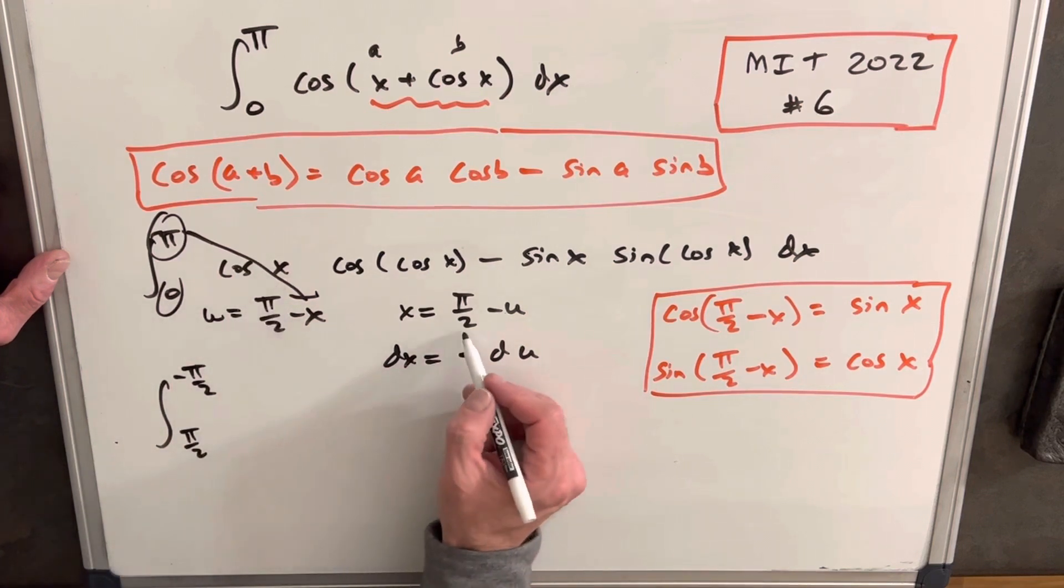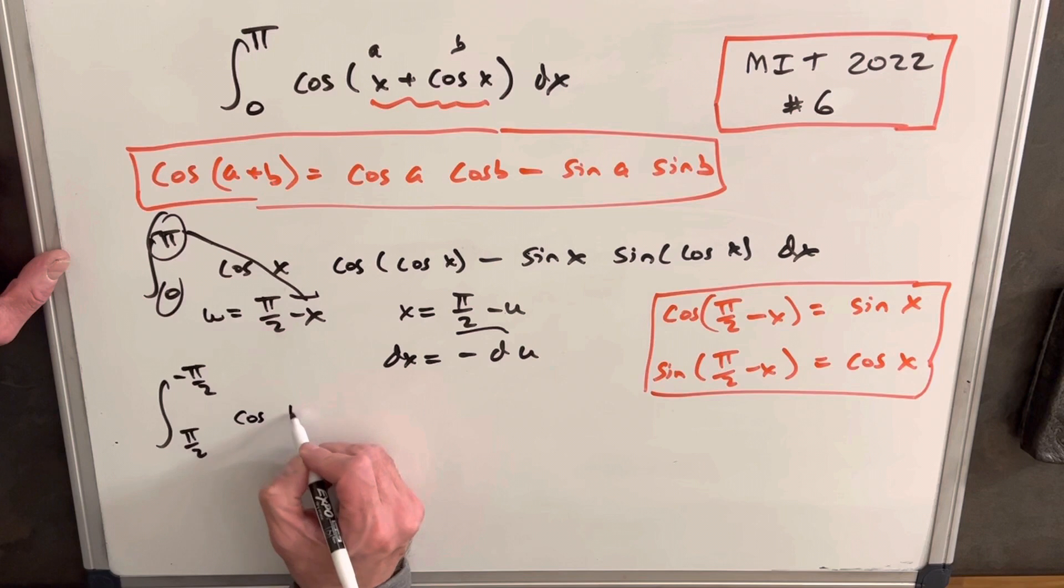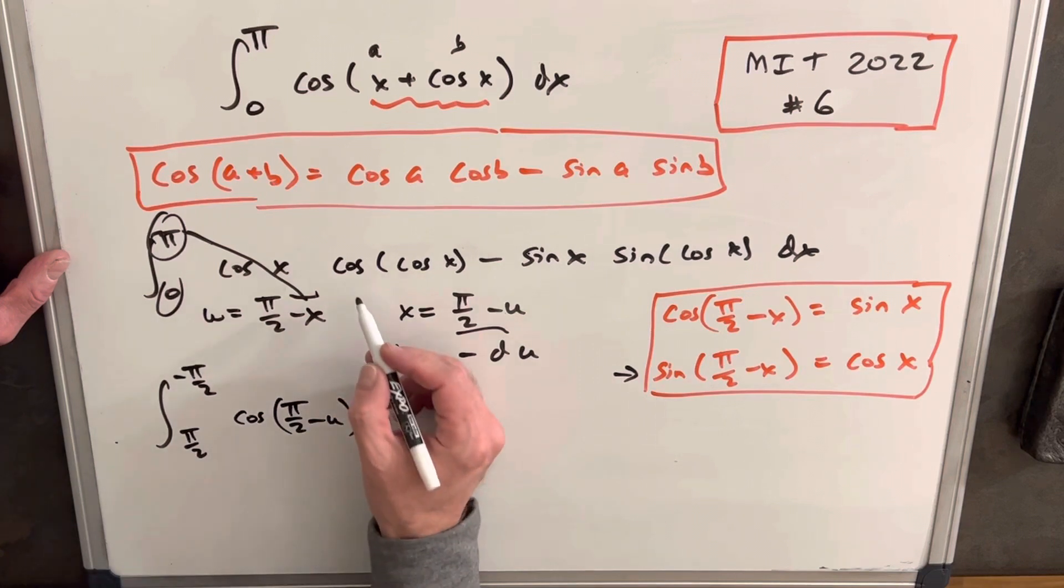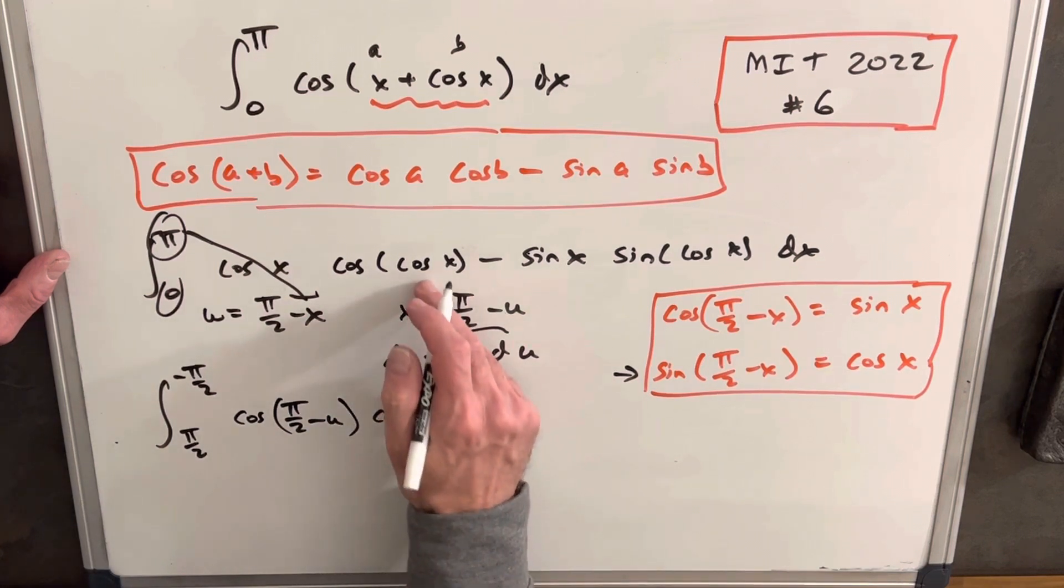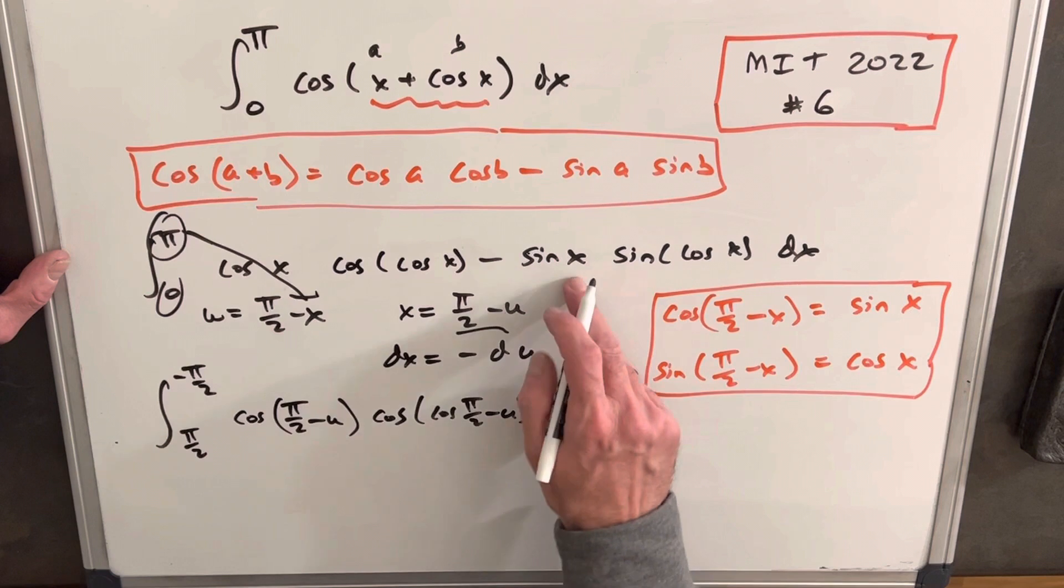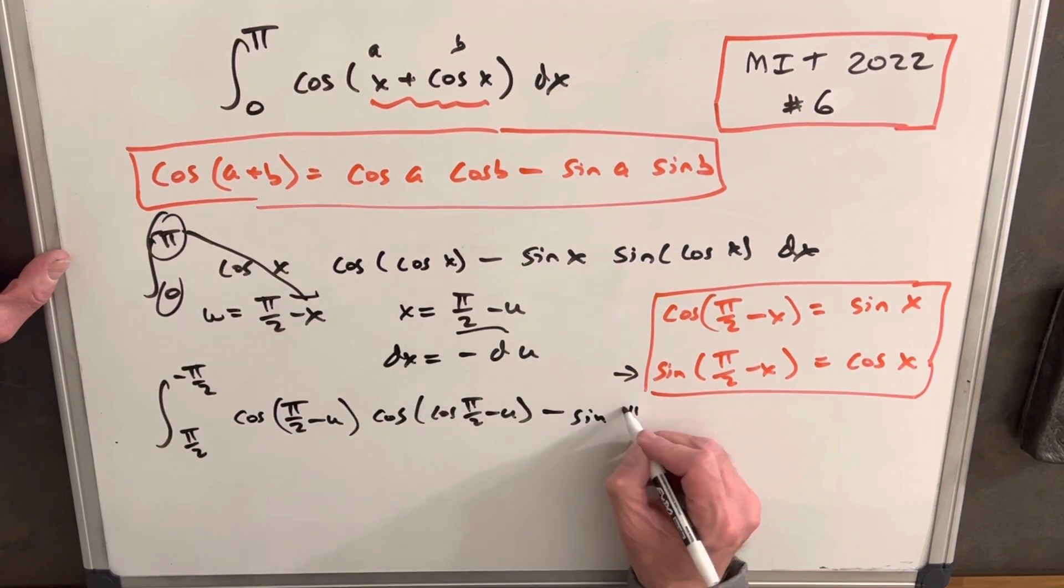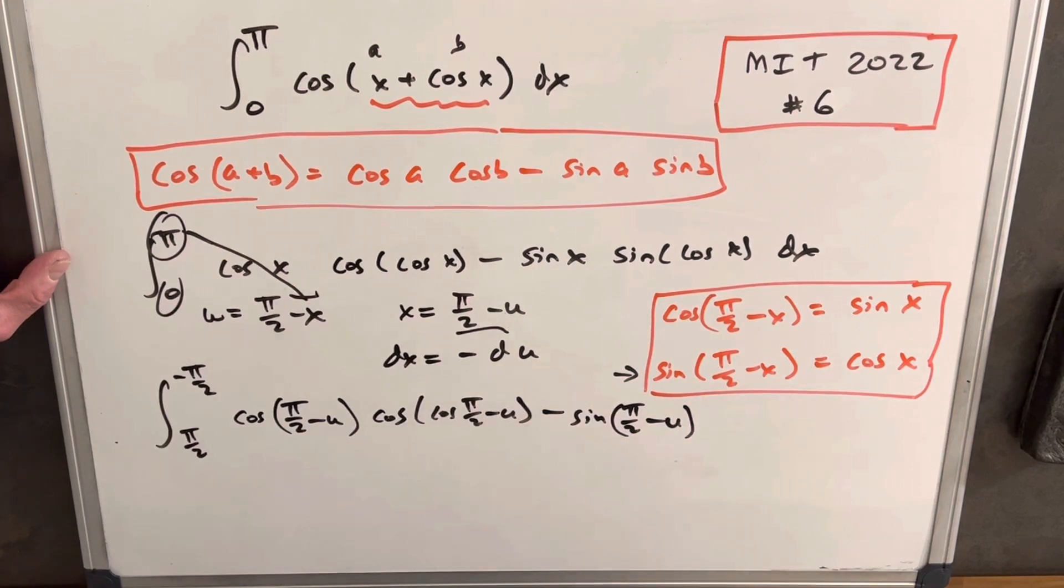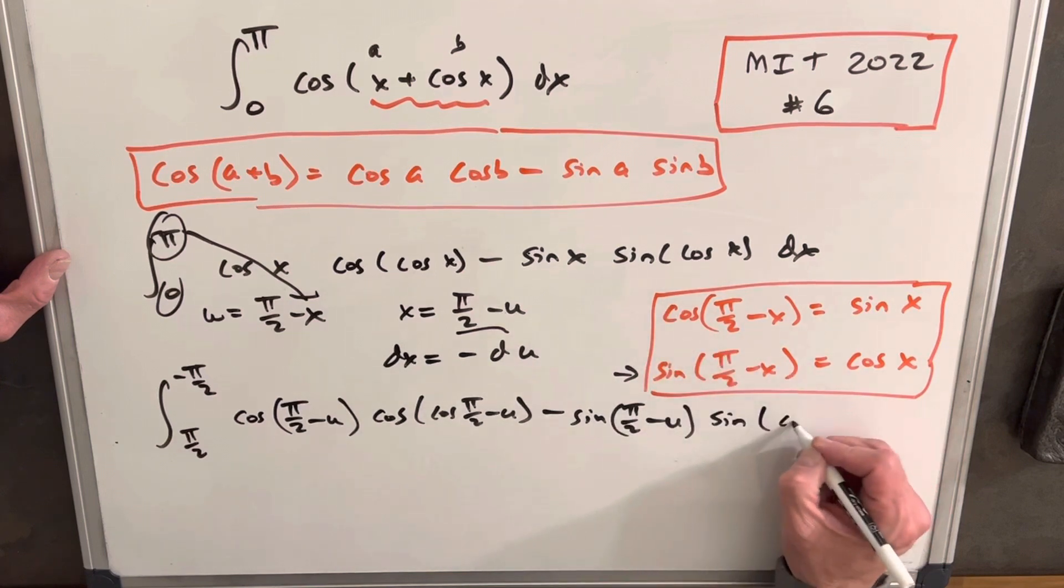Then, okay, so cosine x, we have our x value. So we're going to have cosine pi over 2 minus u, which we found earlier was just going to be sine. And then we're going to have our cosine, same thing again, cosine pi over 2 minus u, minus sine, okay, of our pi. So you can kind of see we're actually transforming each of these expressions. We're flipping from sine to cosine. And then we're going to have sine, cosine pi over 2 minus u.